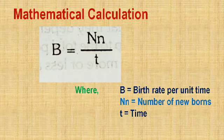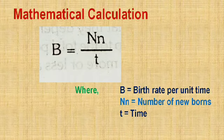The mathematical formula for birth rate is: B = Nn / t, where B is birth rate per unit time (per month or per year), Nn is the number of newborns added, and t is the time. This formula is used to express the birth rate.